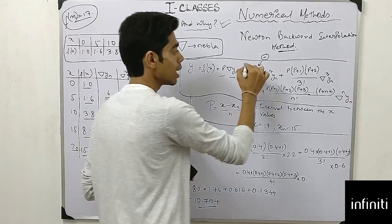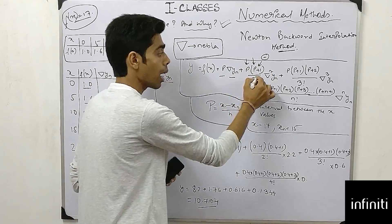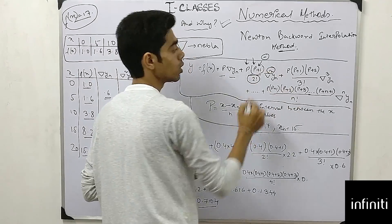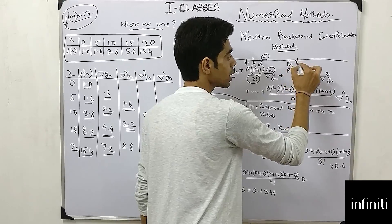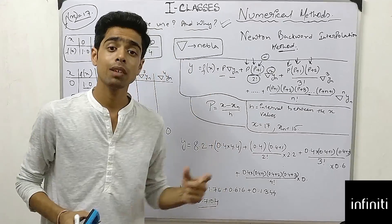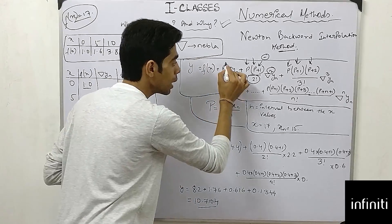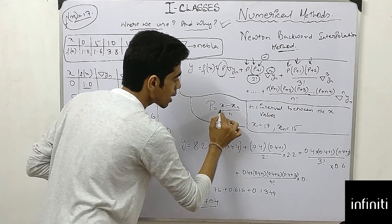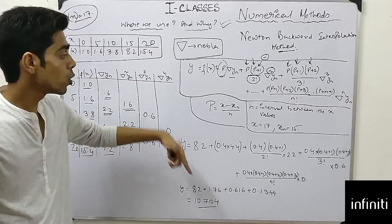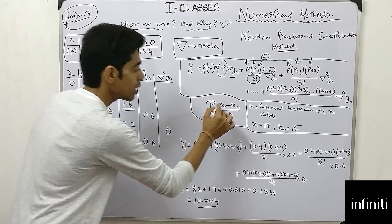To memorize this formula: when there are two terms in the numerator, divide by 2 factorial and the delta is squared; when there are three terms, divide by 3 factorial and the delta is cubed. Here, p = (x − x_n) / h. Unlike Newton's Forward formula which uses x₀, here we use x_n — the last relevant value.